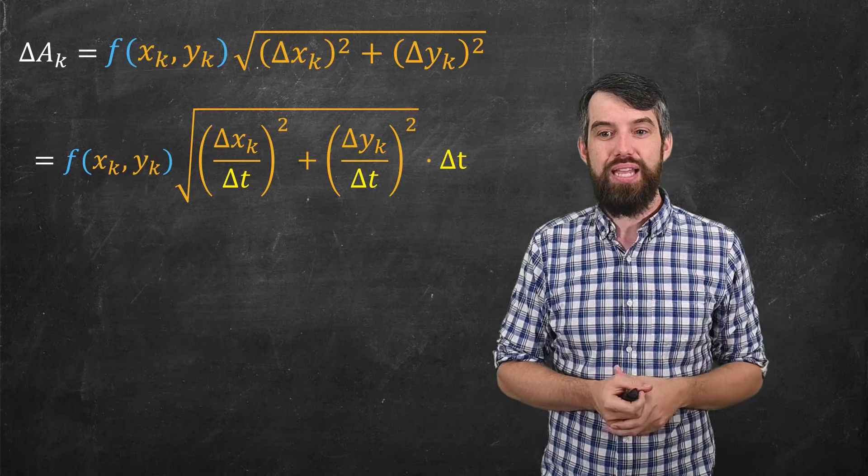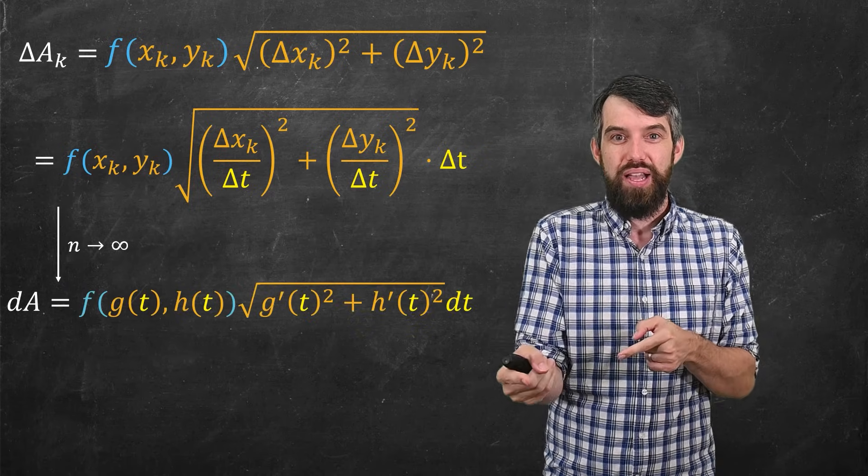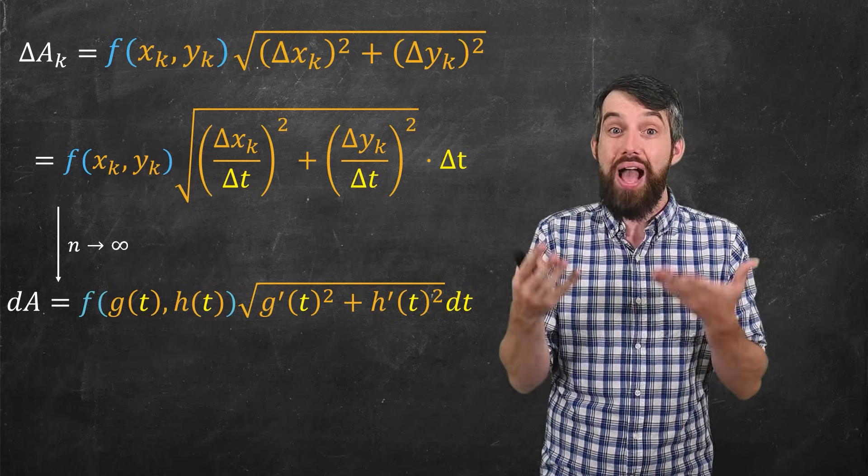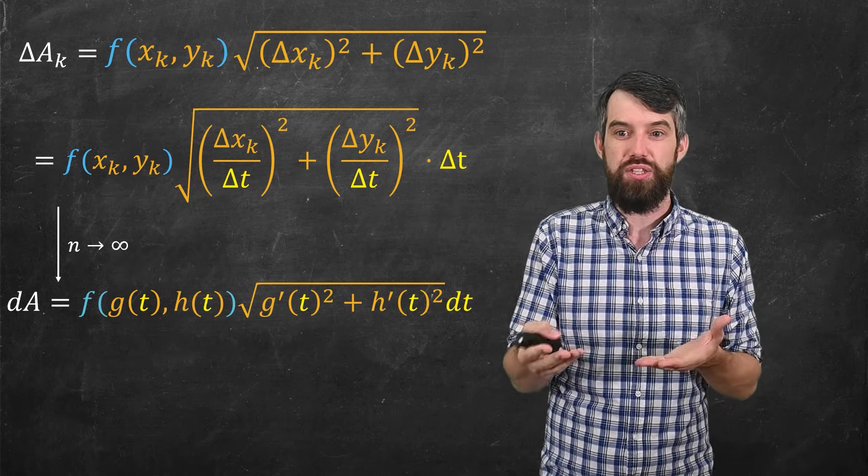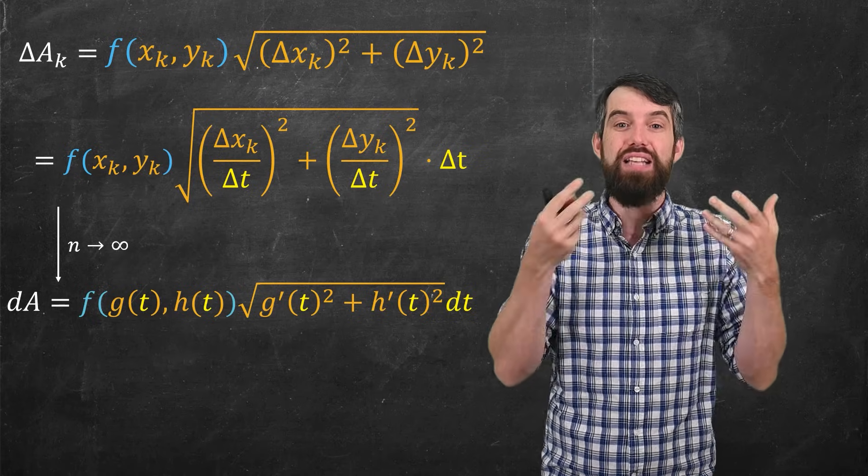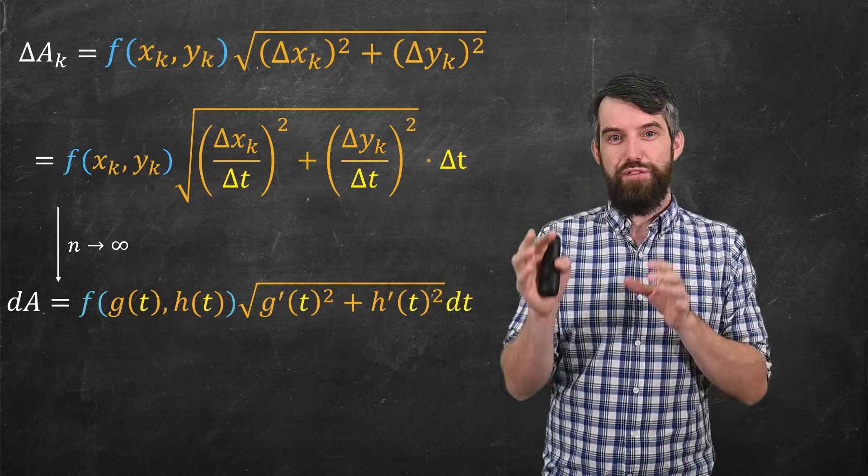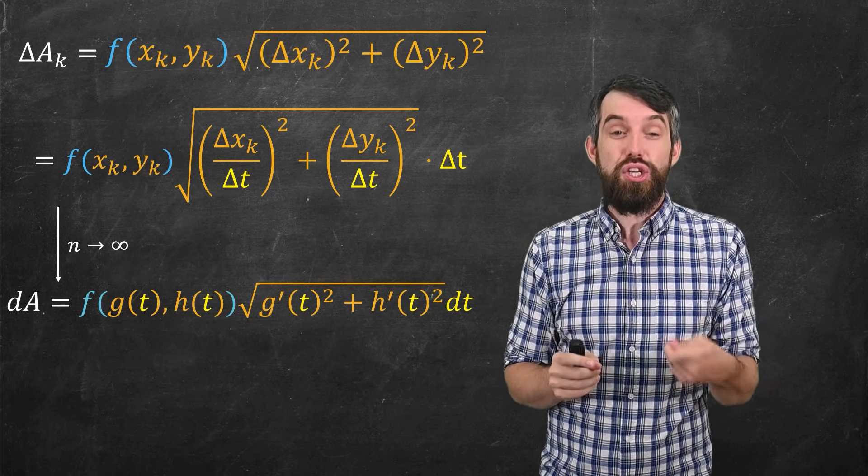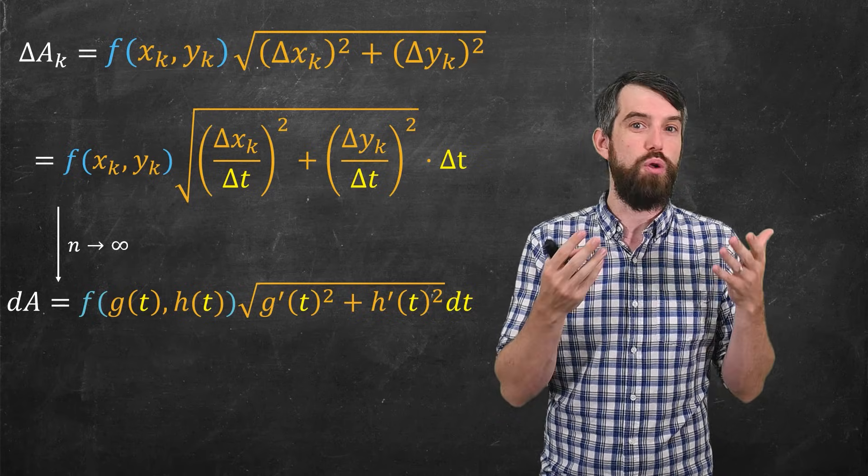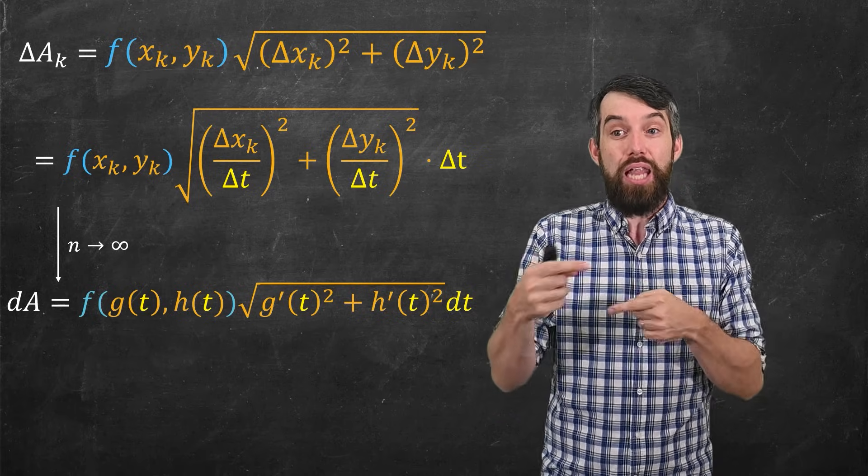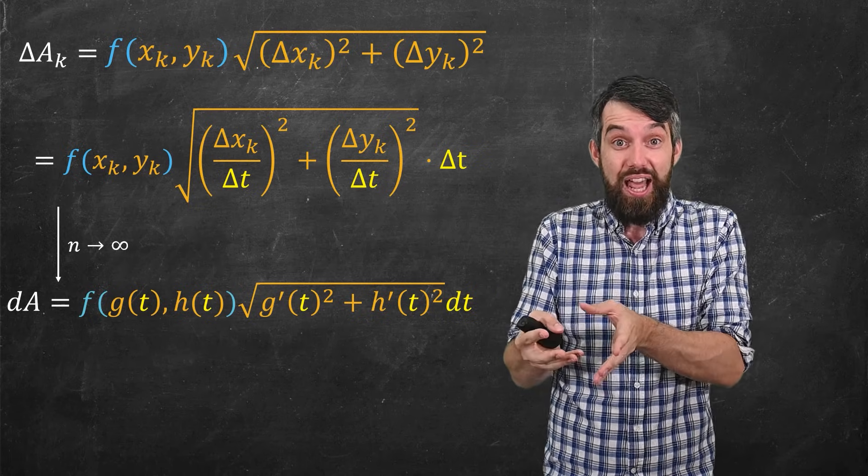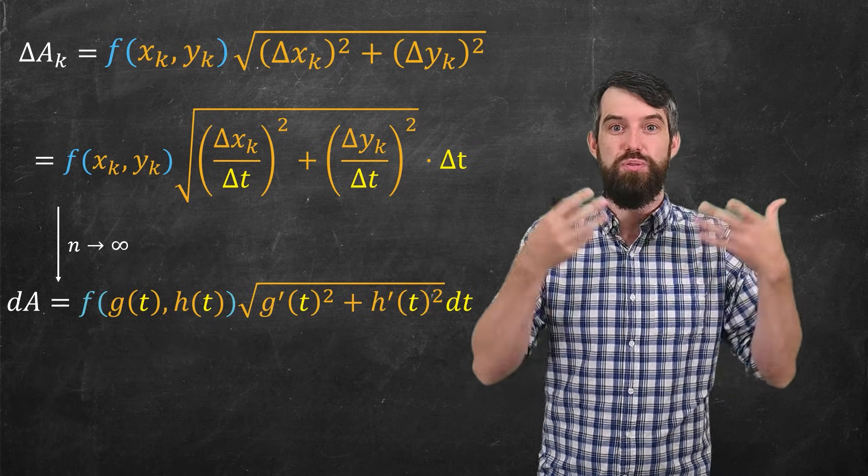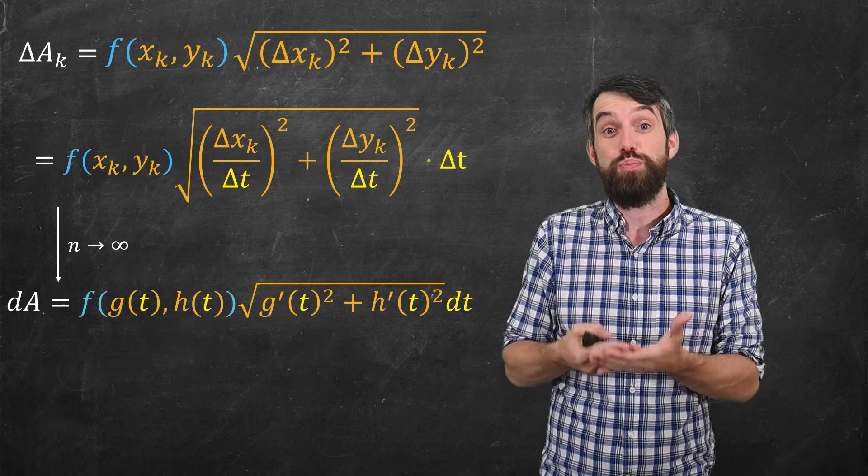And then when I take the limit as n goes to infinity here, a couple different things happen. First, the f just turns into the f of the x and the y at that specific point t, so g(t) and h(t). So the f just changes from at a specific point to as a function of t. And then more importantly, if you look at the Δx_k over Δt, as n goes to infinity, this turns into the derivative of the x component. The x component was called g, so it turns into g'. And then likewise, Δy_k over the Δt, that in the limit as n goes to infinity, also turns into h'. So either way, I get this new formula in terms of the derivative of this g' squared and this h' squared.